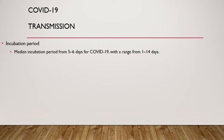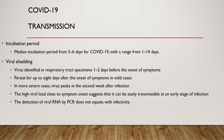The incubation period of COVID-19 is 5 to 6 days, ranging from 1 to 14 days. The virus is first identified in respiratory tract specimens one to two days before the onset of symptoms. The virus can remain up to eight days after symptom onset in mild cases, while in severe cases the virus peaks in the second week. During early infection, a high viral load was found, suggesting easy transmission during the early stage. Since asymptomatic persons can be PCR positive, detection of viral RNA by PCR does not equate with infectivity, and asymptomatic people can also shed the virus.